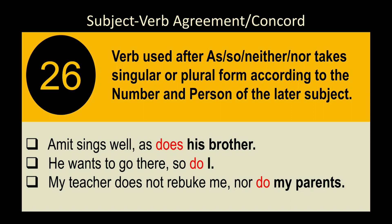Rule 28: Verbs used after 'as,' 'so,' 'neither,' 'nor' take singular or plural form according to the number and person of the later subject. Examples: 'Amit sings well, as does his brother' — 'his brother' is singular, present indefinite, so 'does.' 'He wants to go there, so do I' — 'I' takes 'do.' 'My teacher does not rebuke me, nor do my parents' — 'my parents' is plural, so 'do.'